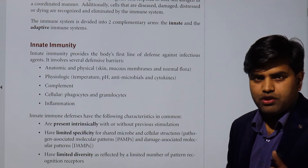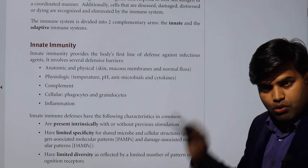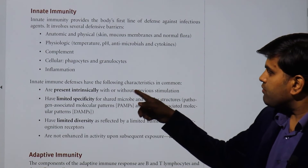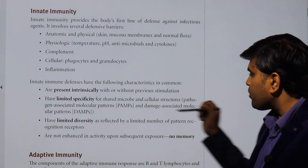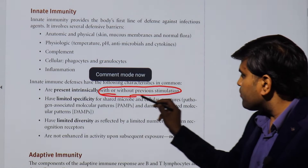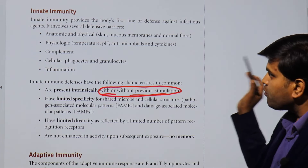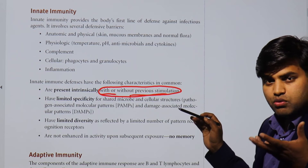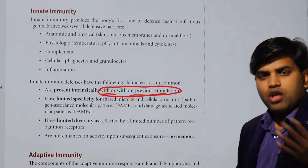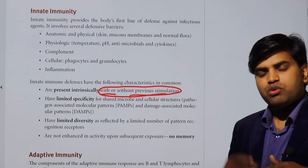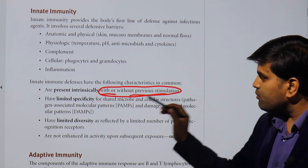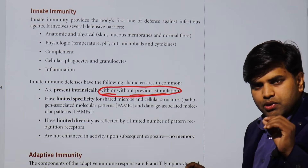Adaptive immunity changes according to the pathogenic organism, but the innate immunity is inborn and remains the same throughout your life. Innate defenses have the following characteristics in common: they are present intrinsically with or without previous stimulation, so they are not dependent on previous stimulation. Although adaptive immunity will depend on previous stimulation and the response will be higher if there is prior exposure, in innate immunity nothing changes. It has limited specificity and does not become specific to a particular organism.